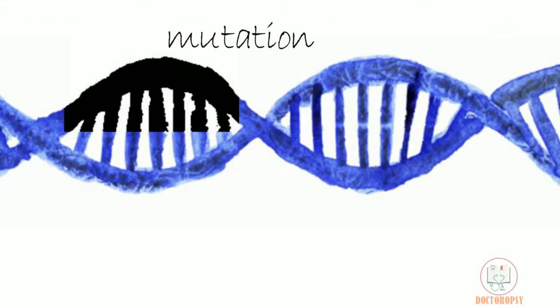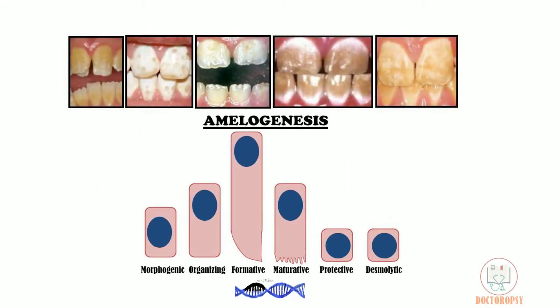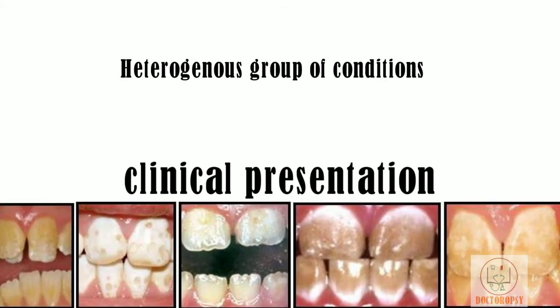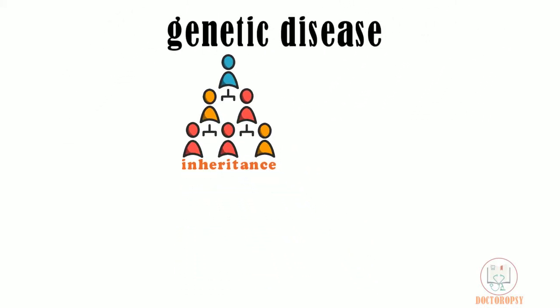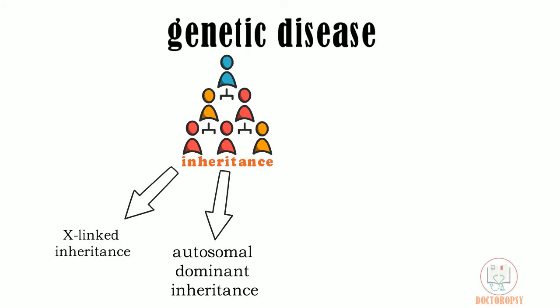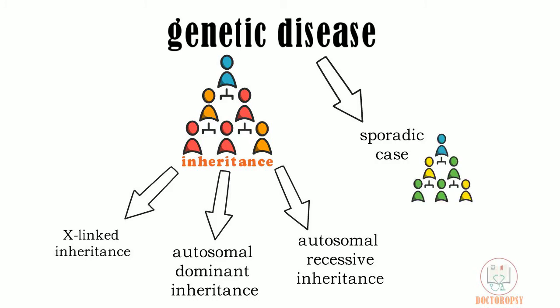Amelogenesis imperfecta occurs due to mutation of genes related to enamel formation. Depending on what gene is getting mutated, it affects a particular stage of enamel development. The defect in that stage of development influences the clinical presentation of the enamel. Thus, amelogenesis imperfecta is a heterogeneous group of conditions with a wide range of clinical features.